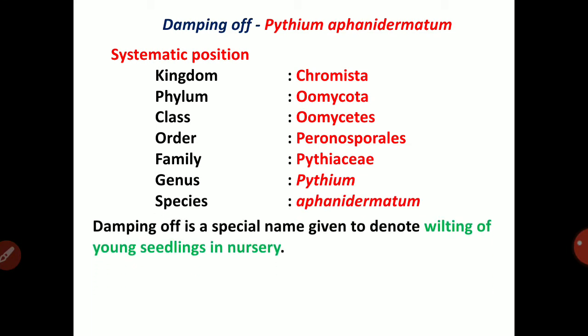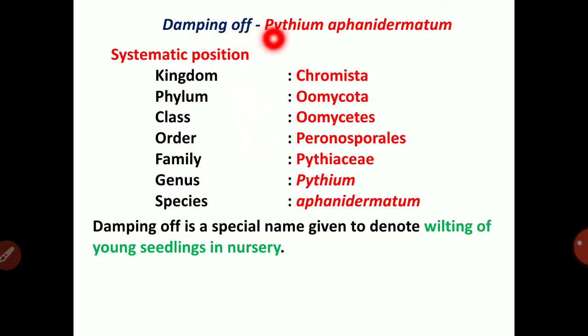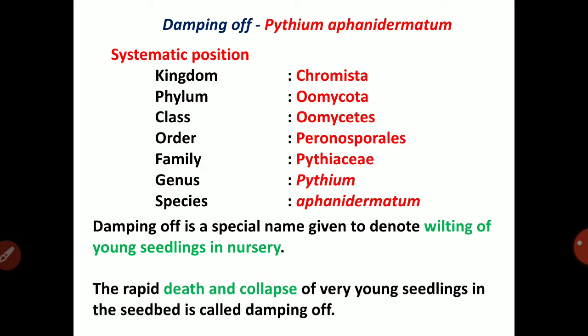Damping off is a special name given to denote wilting of young seedlings in the nursery. It is a nursery disease. The damping off disease is most severe at the seedling stage. The rapid death and collapse of very young seedlings in the seedbed is called damping off.